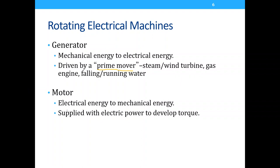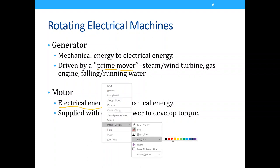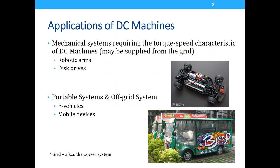Motors use electrical energy to make something rotate or move — electrical energy is converted to mechanical energy. Using electric power, the motor develops torque. Applications of DC machines include toys like the Tamiya brand, robotic arms, disc drives, and portable or off-grid systems like e-vehicles.